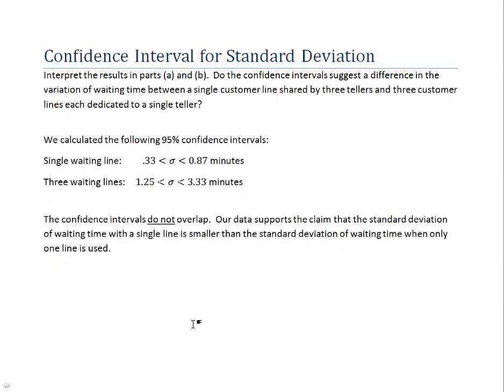And now let's interpret our results. We calculated two 95% confidence intervals. For the single waiting line, that was the confidence interval. For the three waiting lines, that's the confidence interval. Now notice these confidence intervals do not overlap. The confidence interval for three waiting lines is to the right of, those values are to the right of, or greater than, the confidence interval for a single waiting line. So our data does support the claim that the standard deviation of a waiting time with a single line is smaller than the standard deviation of the waiting time when three lines are used. Notice we haven't said how big the difference is, but we've just claimed that there is a difference.